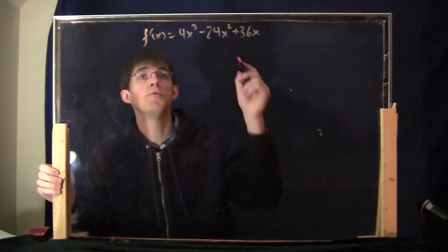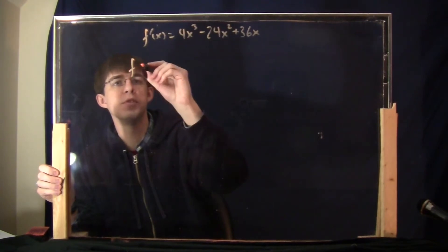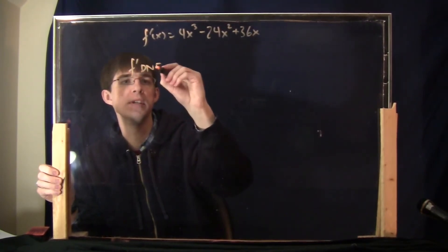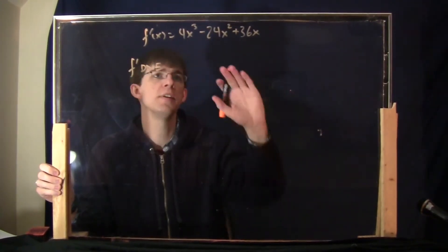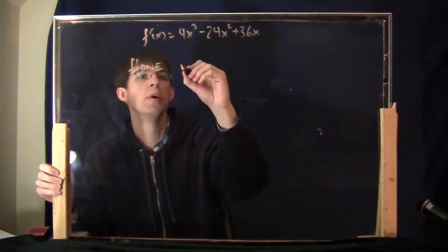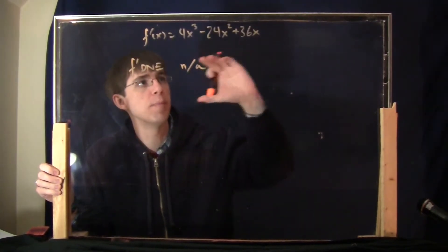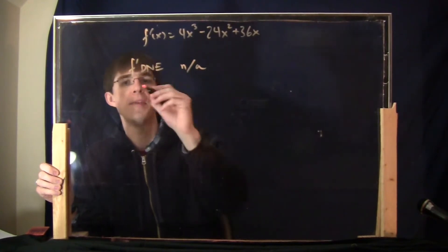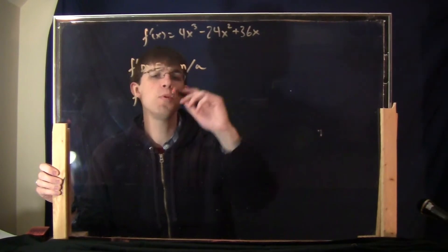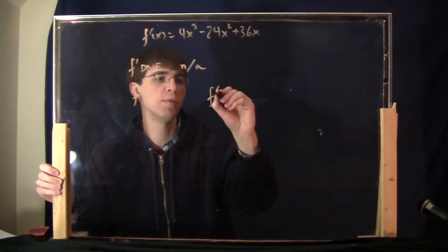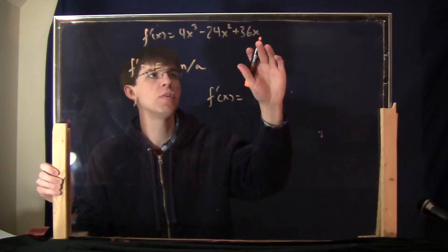For my critical numbers, we've got to find when the derivative does not exist and also set it equal to 0. The does-not-exist part is easy in this case — there are no denominators, no square roots, nothing that could mess this up. So f prime always exists and we don't have to care about that. For f prime equals 0, before we solve, let's simplify the derivative as much as we can. You can factor out x and also factor out 4.